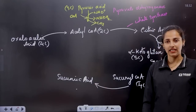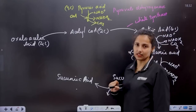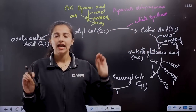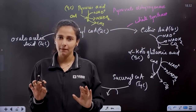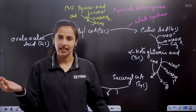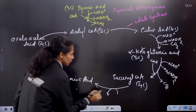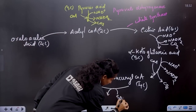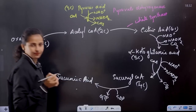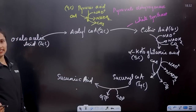From succinyl Coenzyme A, which is a four-carbon compound, ATP is formed — specifically GTP, guanosine triphosphate. GDP is converted, releasing energy.